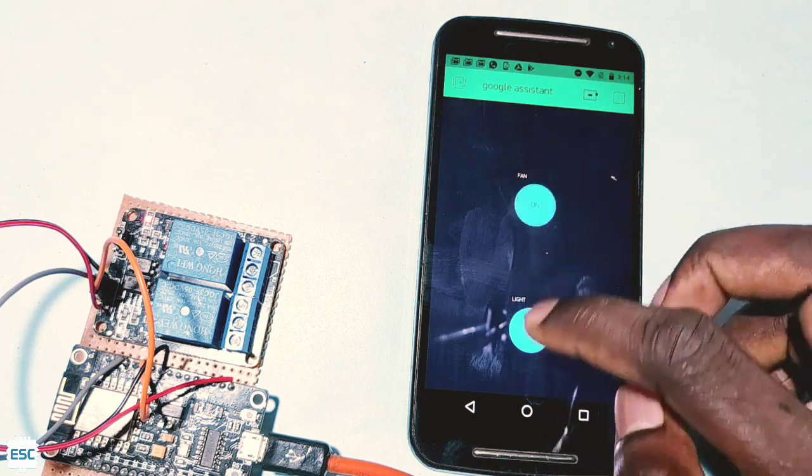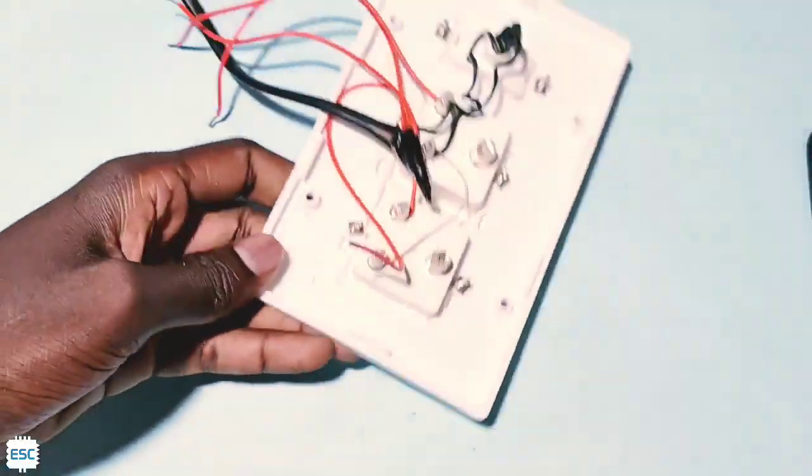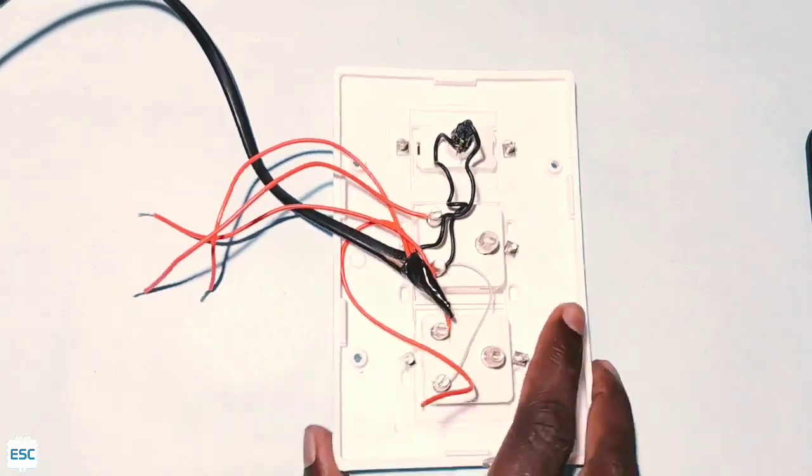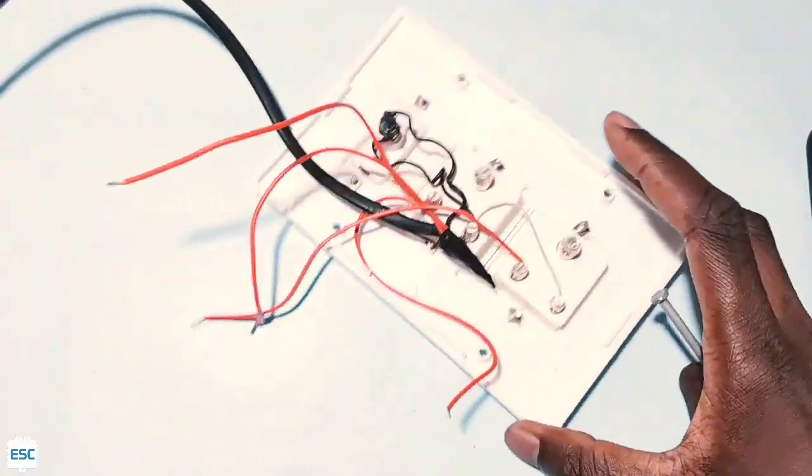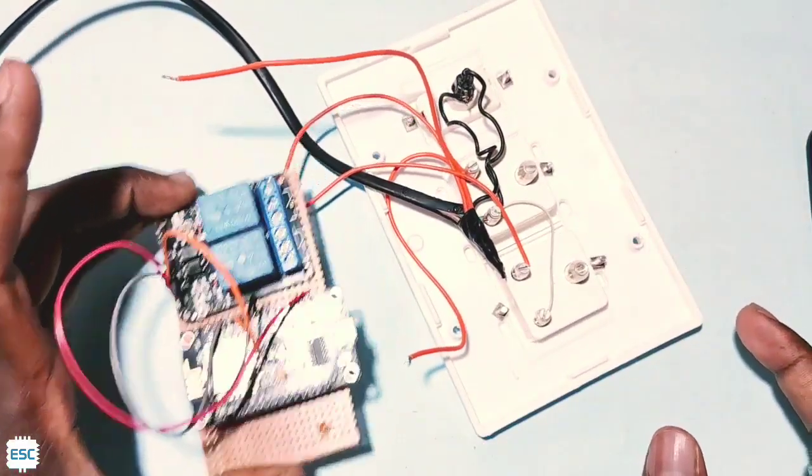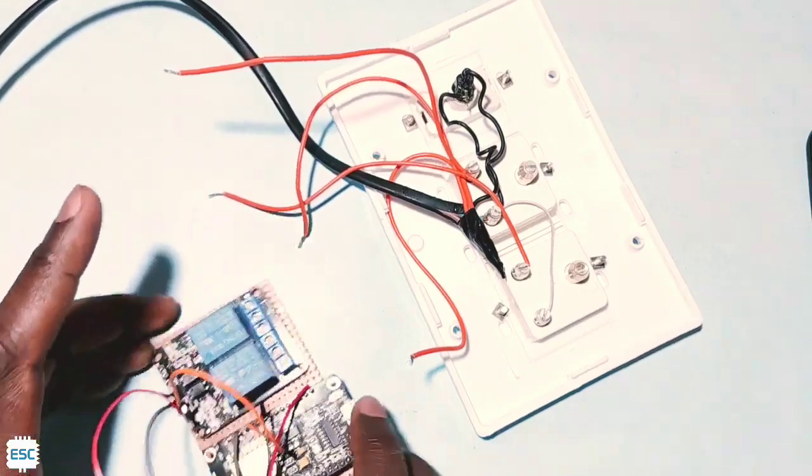So you can see everything is working, so let's move to the building of the extension board. You can see a two socket extension board here. Let's connect extension board and relay module.